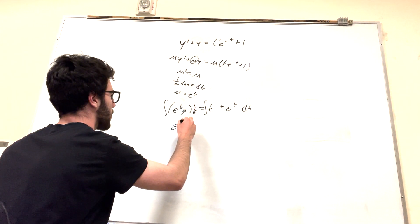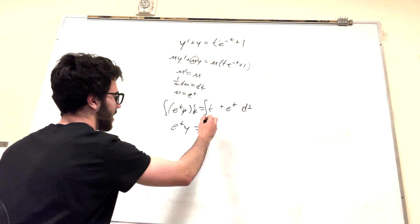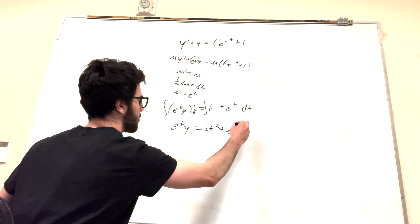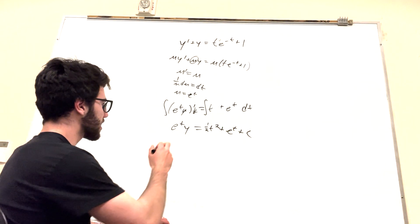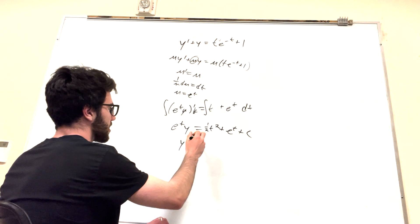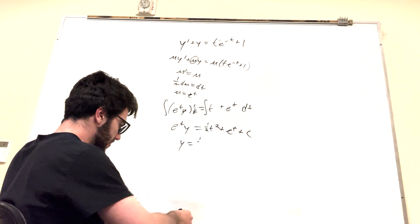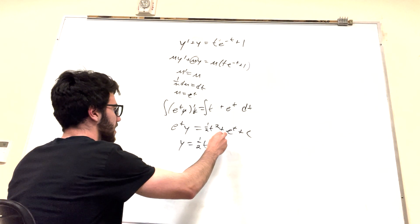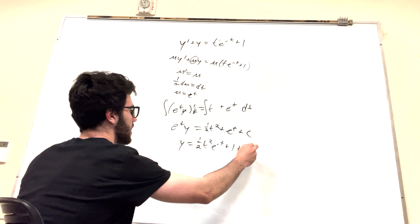It's just gonna be e to the t, y, and then this is gonna be 1 half t squared plus e to the t plus c. Then if you divide by e to the t from both sides, you're gonna get y is equal to, oh, bye-bye, t squared e to the negative t plus 1 plus c e to the negative t.